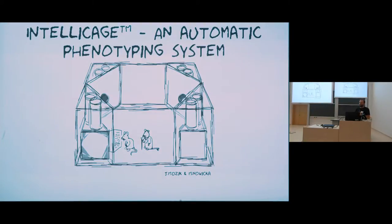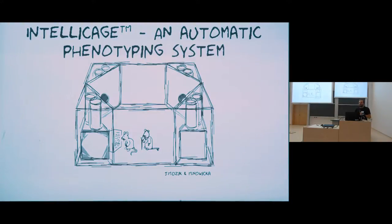In every corner, you have two drinkers, access to which is controlled with a programmable door. Every animal is tagged with an RFID transponder, so its identity is known when it enters the chamber. A specific paradigm may then be applied — for example, an animal may need to nose-poke the door several times or perform a certain sequence of nose-pokes in order to access a drinker.